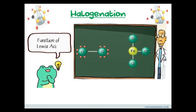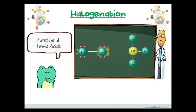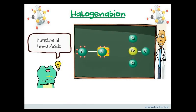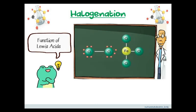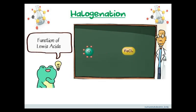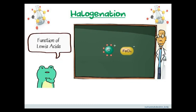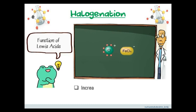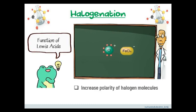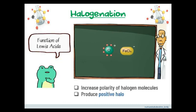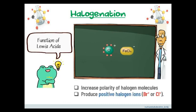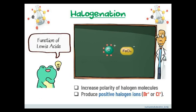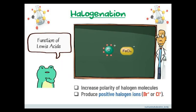The first step of the reaction involves interaction between chlorine and the catalyst. The chlorine atom is the donor of an electron pair. A complex is formed with a positive charge on the chlorine atom and a negative charge on the metal atom. Lewis acid is needed to increase the polarity of halogen molecules, and also to produce the electrophile — a positive halogen ion, such as Br+ or Cl+. You will learn further about this formation during the mechanism of this reaction.